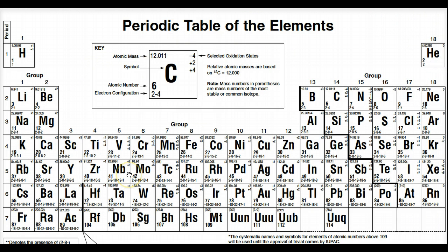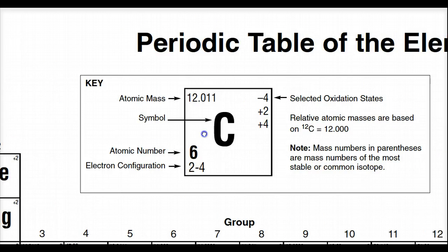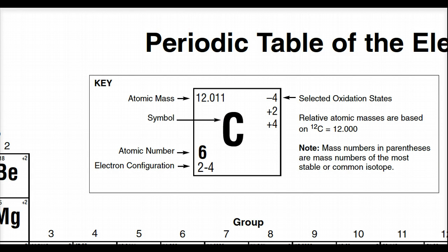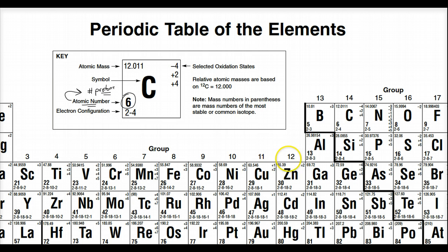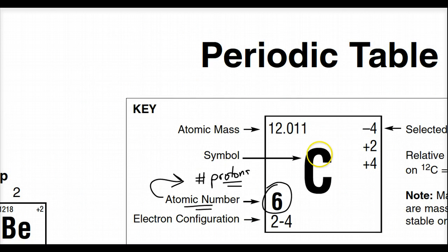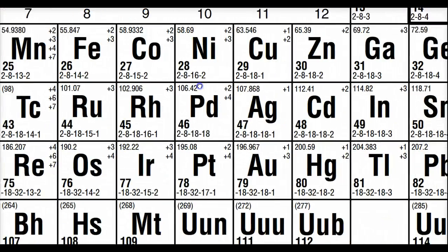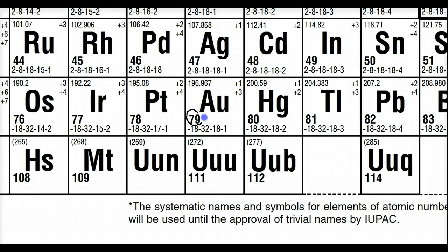Let's go to the periodic table. This is the same one in your reference table. Carbon is centered here — it's got a C and an atomic number of 6. That atomic number is what makes the element unique — six protons. The atomic number is the number of protons. Gold, Au, has 79 protons. Mercury has 80.